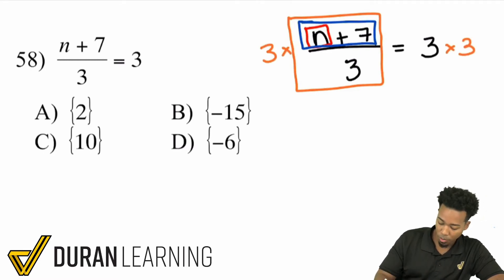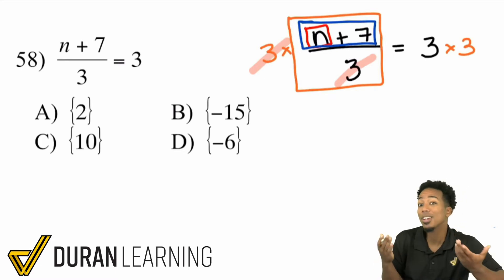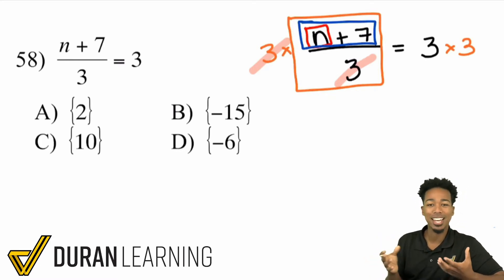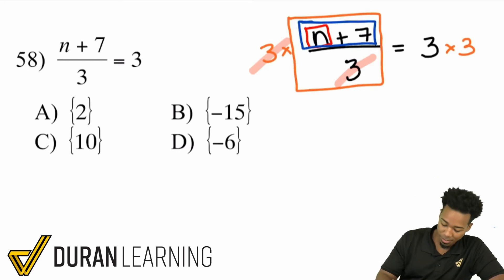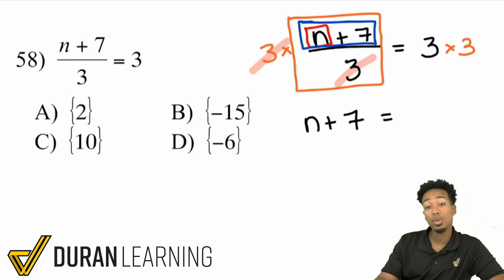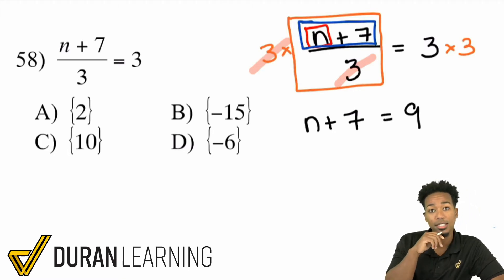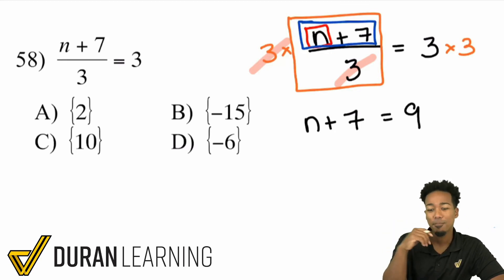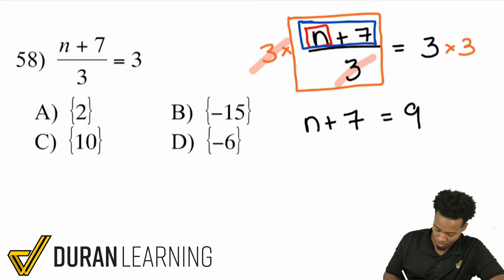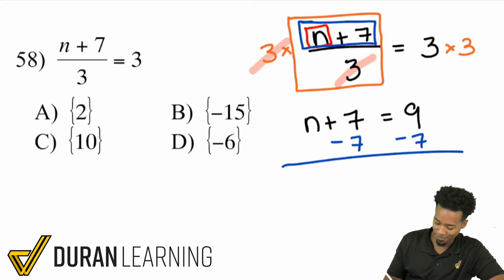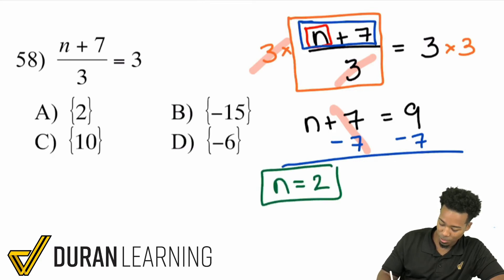Once we do that, it cancels out — that's the point of working backwards: to cancel out everything around the variable. So that's gone and we're left with n plus 7. On the right side, 3 times 3 is 9. Now, to get rid of the plus 7, we subtract 7 from both sides. 9 minus 7 gives us 2. So the answer is n equals 2.